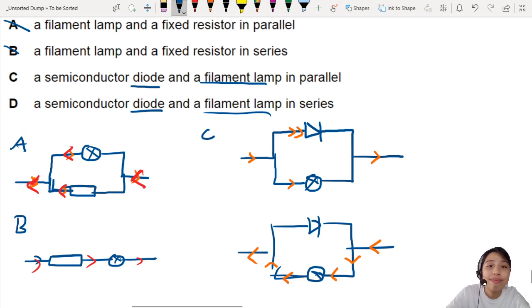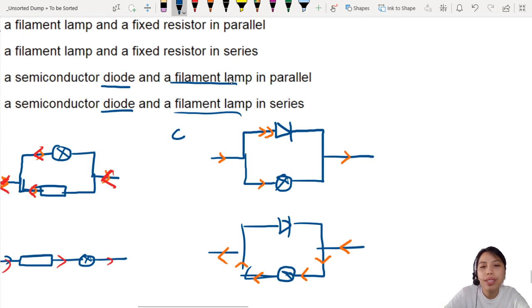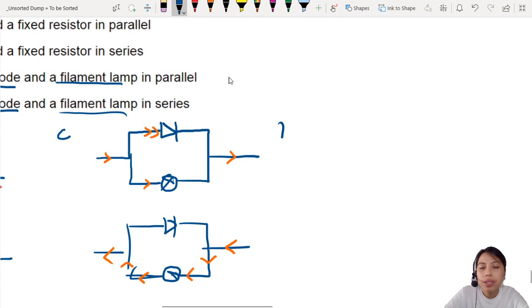So that leaves us with one choice, D. To convince ourselves, let's draw it out too. So D is in series. Lamp and diode. So in one case, you allow current to flow through, no problem. In the other case, if current is flowing the other way, it's completely stopped.